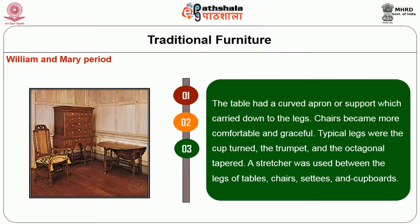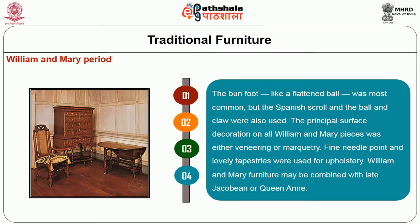The bun foot, like a flattened ball, was most common, but the Spanish scroll and the ball and claw were also used. The principal surface decoration on all William and Mary pieces was either veneering or marquetry. Fine needlepoint and lovely tapestries were used for upholstery. William and Mary furniture may be combined with late Jacobean or Queen Anne period pieces.